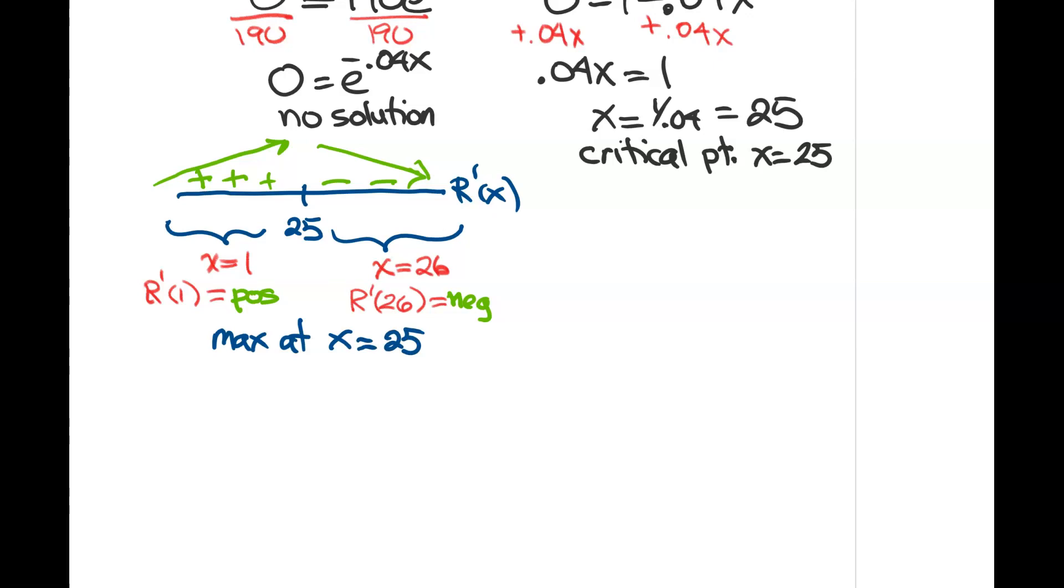That is the answer to the second part of this. So let me just write that out. What that means is what I want to do is I want to sell 25 units of cat food to maximize the revenue.